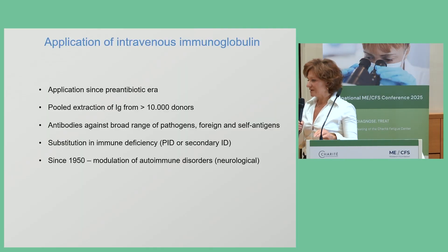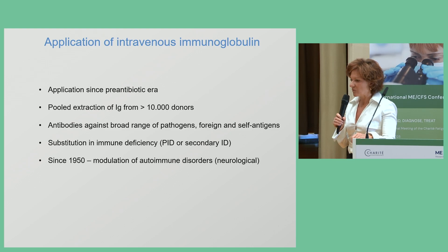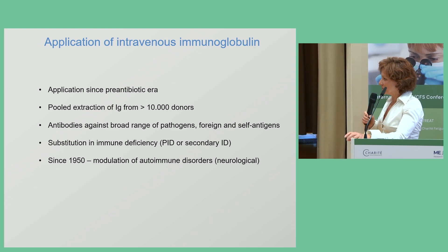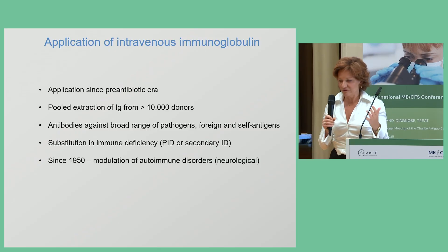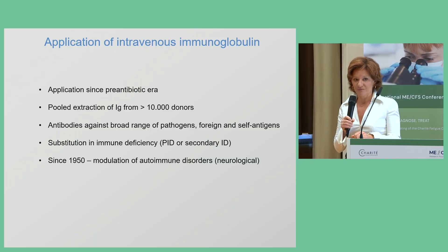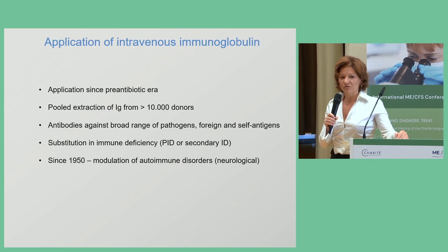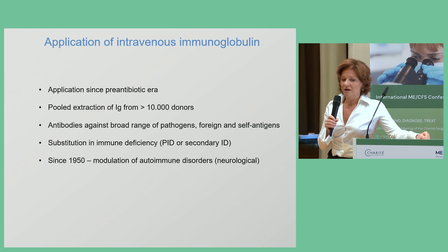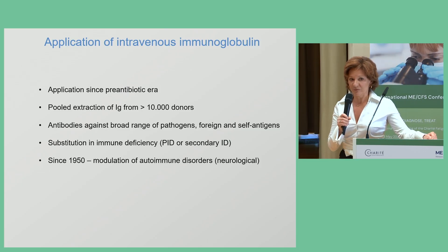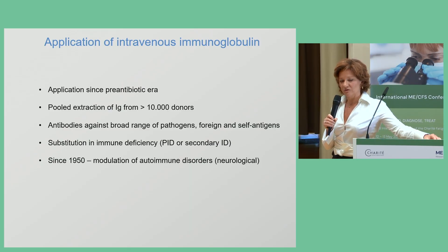The application of immunoglobulins goes back more than one century to the pre-antibiotic era, when patients were given immunoglobulins to improve immunity. Immunoglobulins are a pooled extraction of antibodies from more than 10,000 up to 100,000 donors. This preparation consists of antibodies against a broad range of pathogens as well as antigens and self-antigens. The primary application of immunoglobulin was approved to treat immunodeficiency — primary immunodeficiency or secondary immunodeficiency due to oncological diseases or immunosuppressive therapy. Since the 1950s, immunoglobulins have also been applied to treat neurological autoimmune diseases.